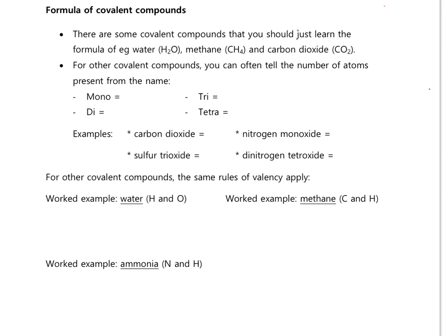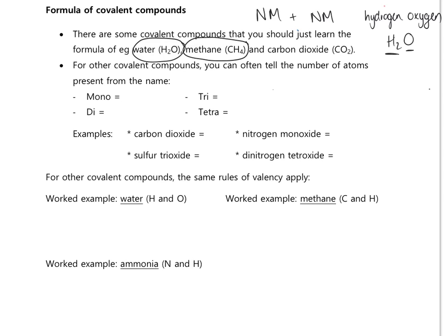The last type of formula we need is for covalent compounds, covered on page six. Covalent compounds contain two non-metals — for example water is hydrogen and oxygen, both non-metals. Its formula is H₂O. A few formulas you should just learn: water is H₂O, methane is CH₄, ammonia is NH₃. For other covalent compounds, the name itself tells you the formula through prefixes.